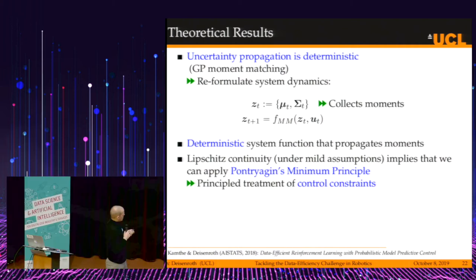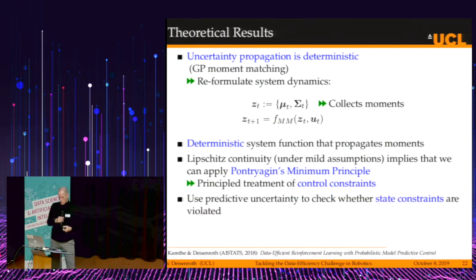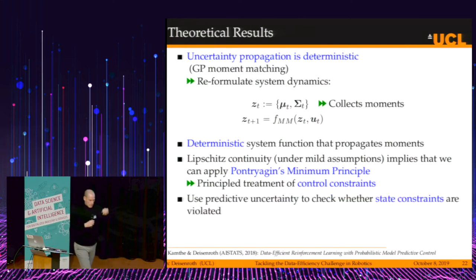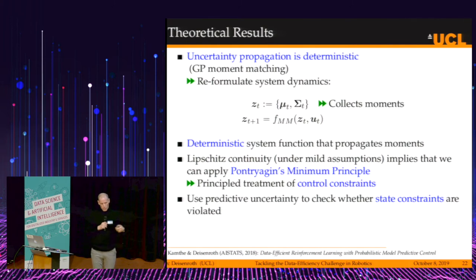We deal with control constraints using Pontryagin's minimum principle. For state constraints, we look at our predictive uncertainty and check whether the state constraints are violated with high probability — which requires having reasonable error bars on our predictions.